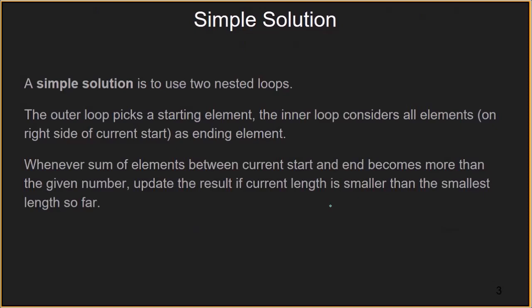Now let's discuss the solutions. The first solution is the simple solution where we use two nested loops. The outer loop picks a starting element and the inner loop considers all elements as the ending element one by one. Whenever the sum of the subarray becomes more than the given value x, we update the result if the current length is smaller than the smallest length encountered so far.